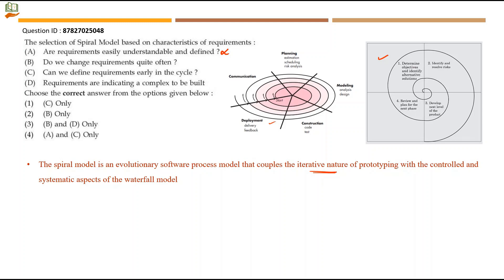Can we define requirements early in the cycle? Not so, because here it is an iterative approach. We need not define requirements completely together. Once we review and plan for the next phase, again we have to go for identifying the alternate solutions for certain problems or determine the objectives for the next phase. So requirements keep changing and will be needed for every phase. We cannot define everything early in the cycle, so that's why we are ruling this out.